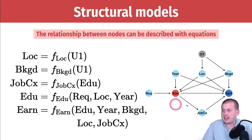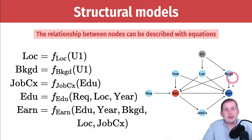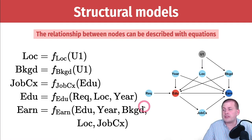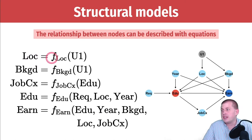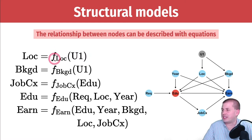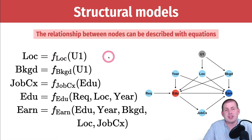If we remember this DAG, it shows that education causes earnings, and it has different confounders and other nodes that influence education and earnings. There are mediators and other confounders here. One way of writing this DAG is as a whole bunch of nested models. This looks kind of scary initially, but really all it's saying is that location is based on some unknown factor. The squiggly F is the mathematical symbol for function.